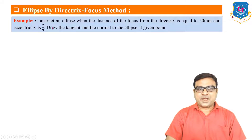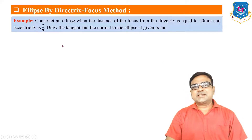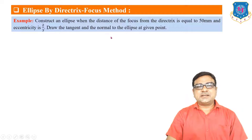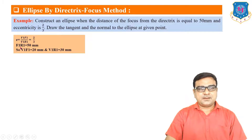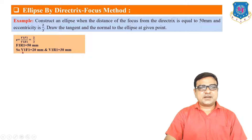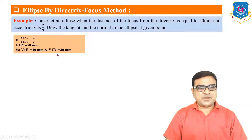The problem: construct an ellipse when the distance of the focus from the directrix is 50 mm and eccentricity is 2/3. Also draw the tangent and normal to the ellipse at a given point. Since eccentricity is 2/3, the ratio VF/VR = 2/3, which is less than 1. The distance between focus and directrix is 50 mm, so the vertex-to-focus distance is 20 mm and vertex-to-directrix distance is 30 mm.